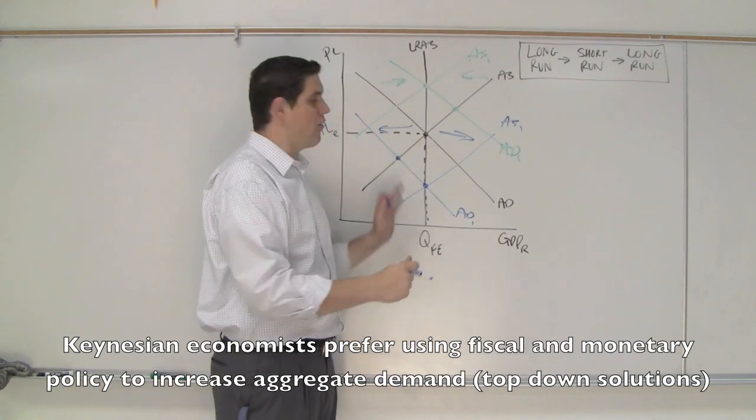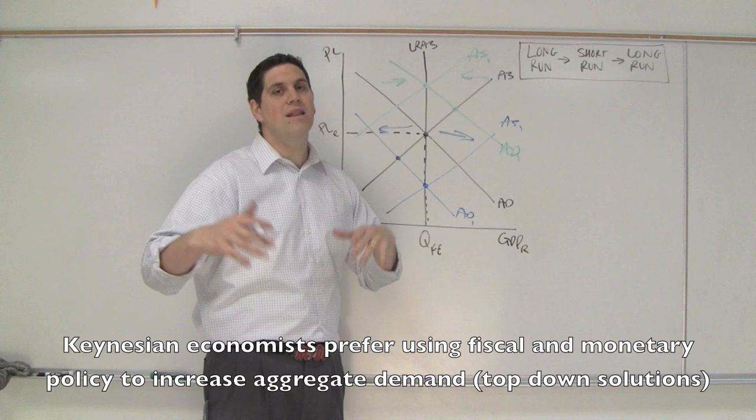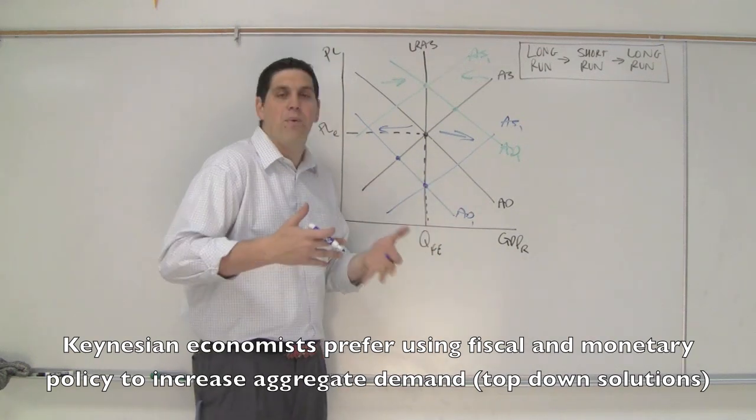The Keynesian is like, all right, let's shift that thing over. Let's increase aggregate demand. Get that thing over. Shift it. Let's not wait. Keynes said in the long run we're dead. There's no reason to wait while people are unemployed.